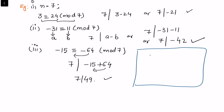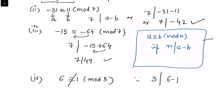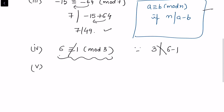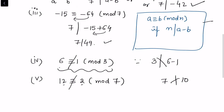Now let's consider examples where the congruence definition is not satisfied. Suppose we take 6 ≡ 1 (mod 3). This is not true because 3 does not divide 6 minus 1, which is 5. Similarly, 12 ≡ 2 (mod 7) is also not true because 7 does not divide 10, which is 12 minus 2.